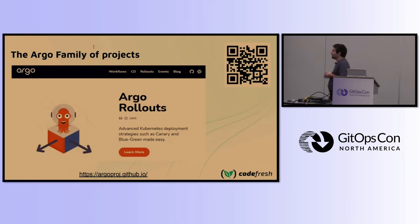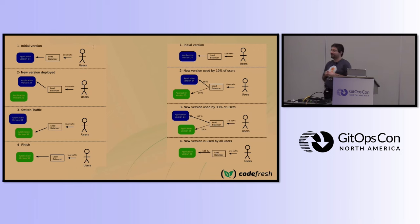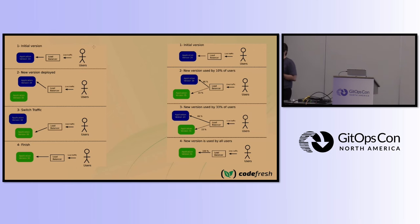A two-minute introduction for those who have never seen it: Argo Rollouts is one of the four projects of the Argo family. It's a self-contained project that can work on its own without Argo CD. Essentially it's a Kubernetes controller that allows you to do progressive delivery.